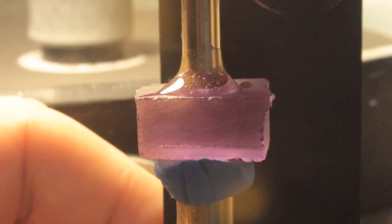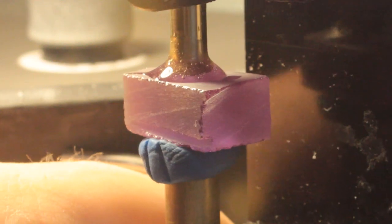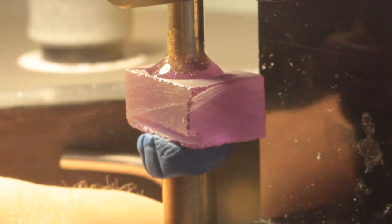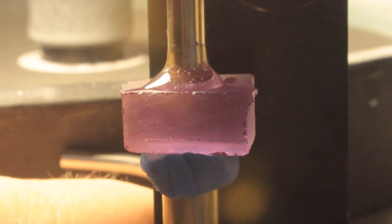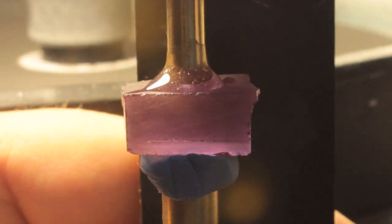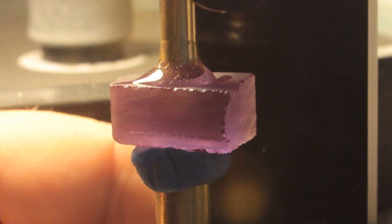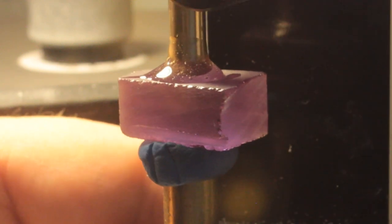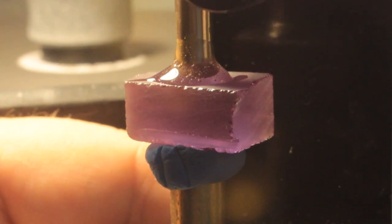This is lab-created alexandrite. Alexandrite is a color change variety of the mineral chrysoberyl. Because the color changes under different light, alexandrite is often described as emerald by day and ruby by night. It is green in daylight or under fluorescent light, and red in incandescent light or candlelight at night.